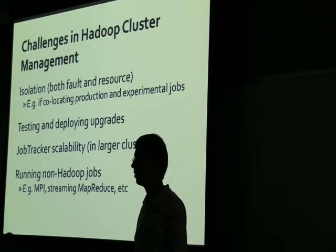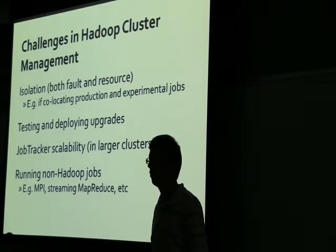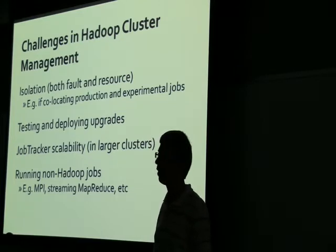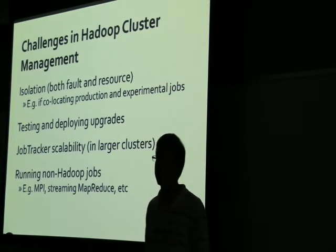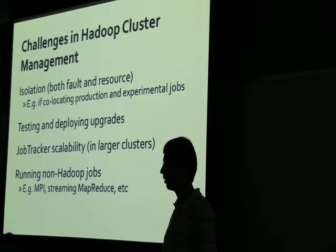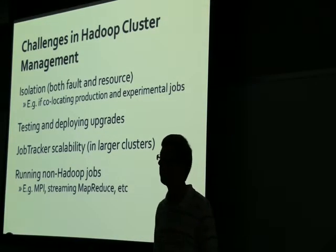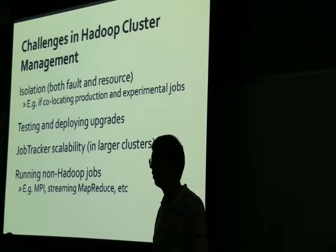The second set of problems is upgrading Hadoop — testing patches and new versions. When you move from Hadoop version 19 to version 20, you have to do it all at once, and if it doesn't work, your cluster is down. What would be ideal is if you could run both versions for a while, try some jobs on the new version, verify it's working, and gradually migrate over.